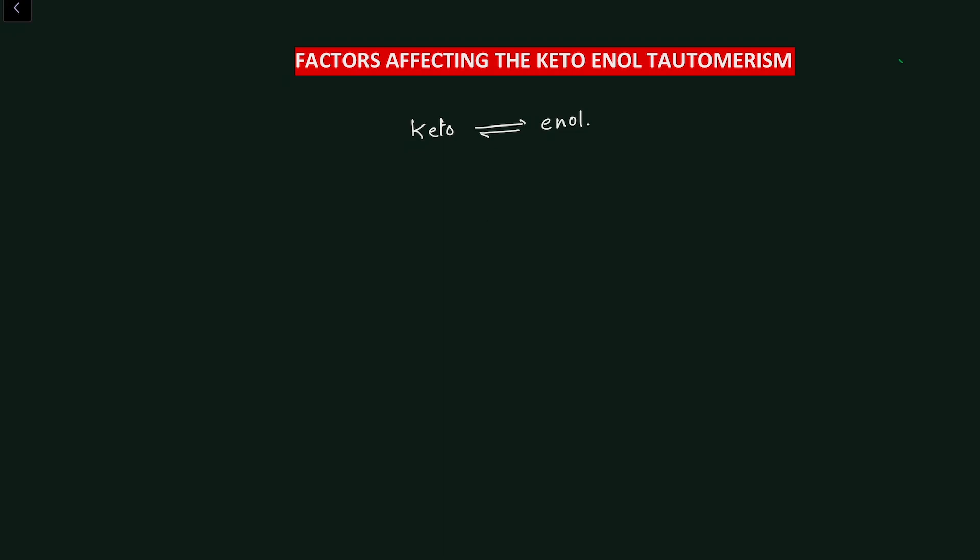Hi everyone, welcome to my channel Big Bang Chemistry — a complete solution of chemistry. In this fourth series of video lectures, which is on factors affecting keto-enol tautomerism, we are going to learn what factors govern the stability of keto-enol tautomerism. From the beginning, we know that one dynamic equilibrium exists between the keto and enol forms.